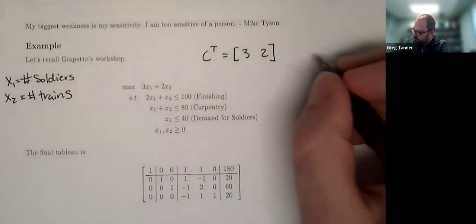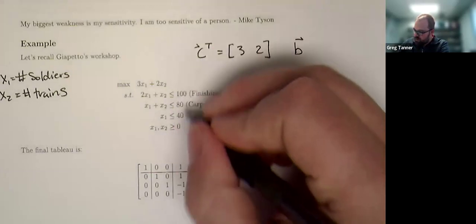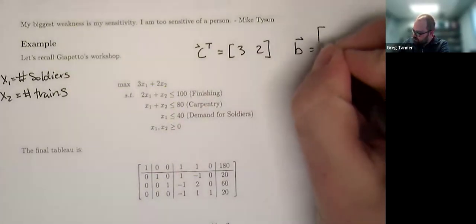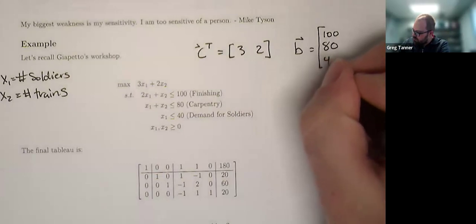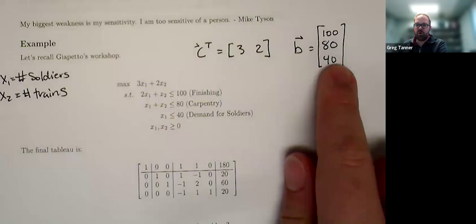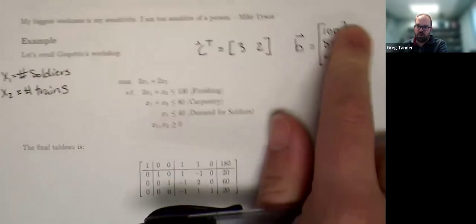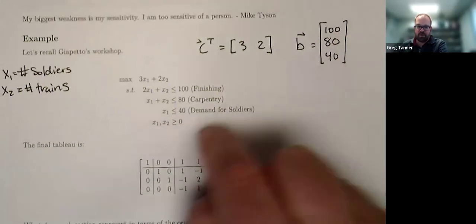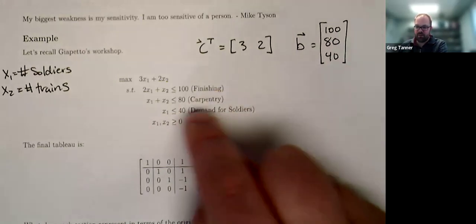We've got our right-hand side vector B. That's these values here. That's the amount of resources we have available. So we've got 100 hours of finishing, 80 hours of carpentry, and 40 units of demand for soldiers. And so we'll look at what happens if we maybe allocate more of these resources. Or in the case of demand for soldiers, maybe we run an advertising campaign to try to increase that demand.